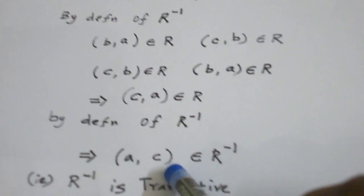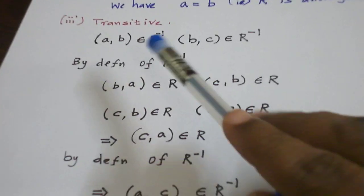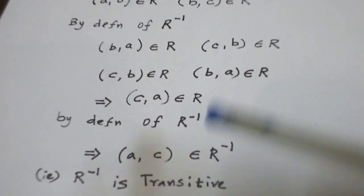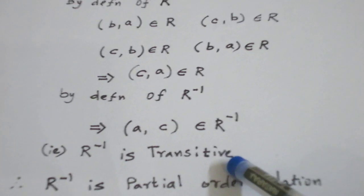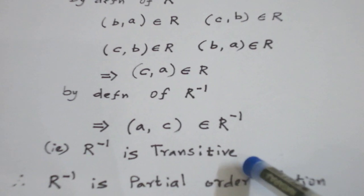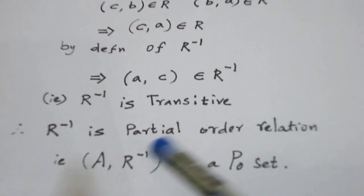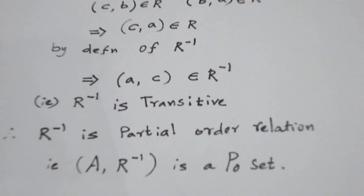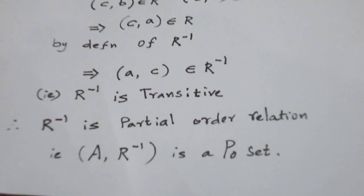Its reverse: (a, c) belongs to R inverse. This is what we are supposed to prove: from (a, b) in R inverse and (b, c) in R inverse, we get (a, c) in R inverse. So R inverse is transitive. Since R inverse is reflexive, anti-symmetric, and transitive, it is a partial order relation. So the set A with relation R inverse is called a partially ordered set. This is what we are supposed to prove.